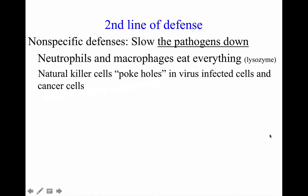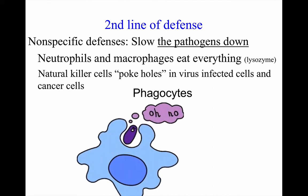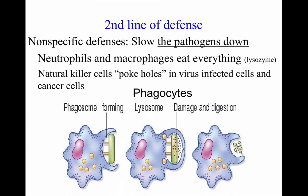The next part of your second line of defense is the actual cells that do the eating — these are called phagocytes. Phagocytes come along and eat bacteria and viruses; they literally engulf them and use enzymes to break them apart, so they can't do any harm to your body. The two main types of cells that do the eating are neutrophils and macrophages, and it's their job to go around, eat, and use enzymes to destroy bacteria and viruses.